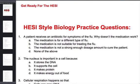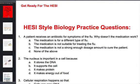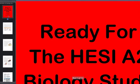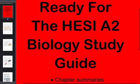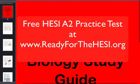If you go to our website at ReadyForTheHESI.org, you can get a free practice test that includes biology, math, anatomy, physiology, chemistry, reading, vocabulary, and grammar. It's a sample of all our practice questions that come straight from our study guide, so have a look and you'll be able to get one for free. Good luck with everything — email us for any questions, even if you haven't purchased any of our study guides.